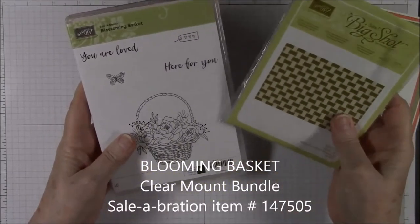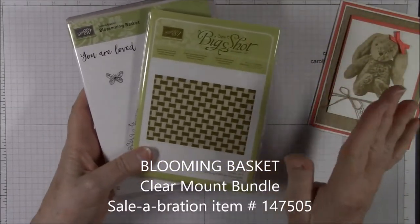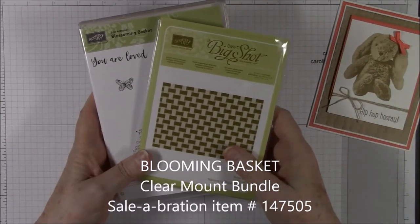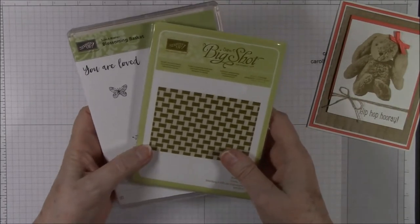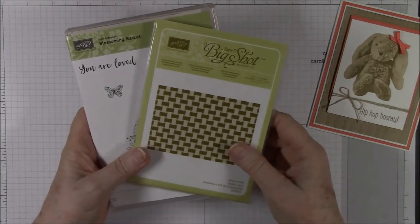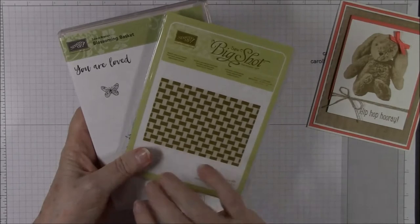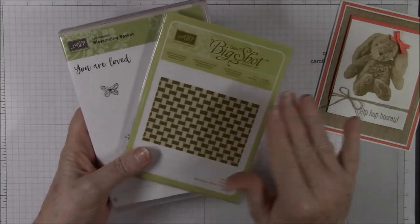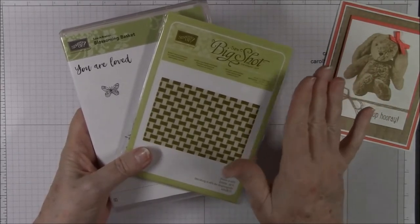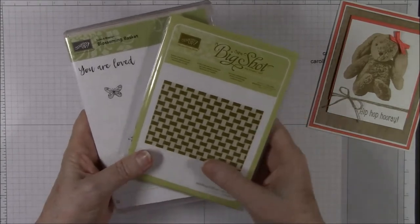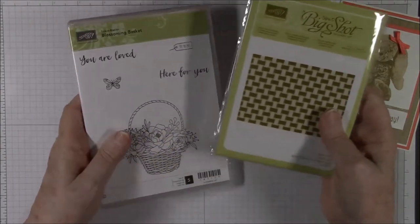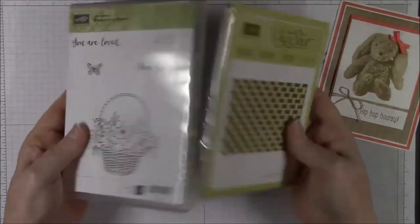And how that works is you purchase $100 or more at Stampin' Up! dot com and you can choose a free Sale-A-Bration item. Now with $100 you can get this set. You can get other sets for a $50 purchase, but to get this set you have to purchase $100. But this is a pretty cool gift.